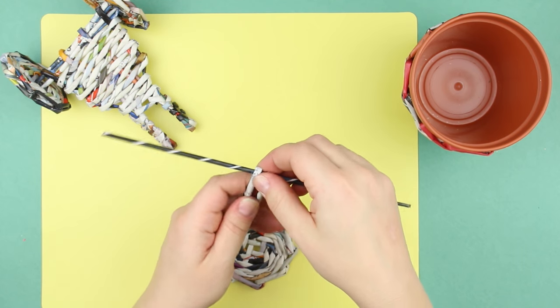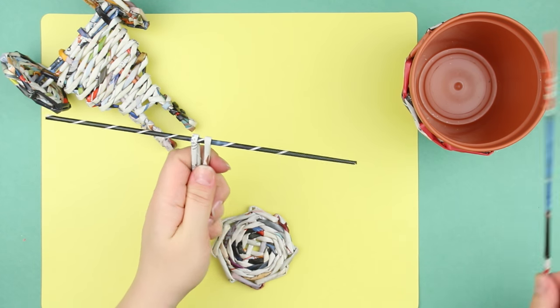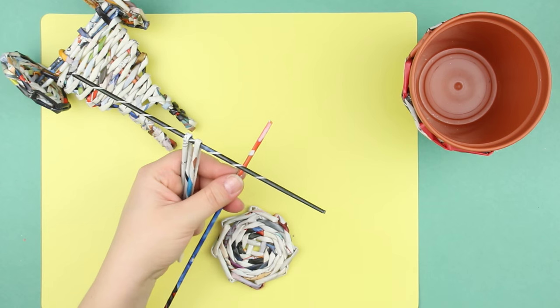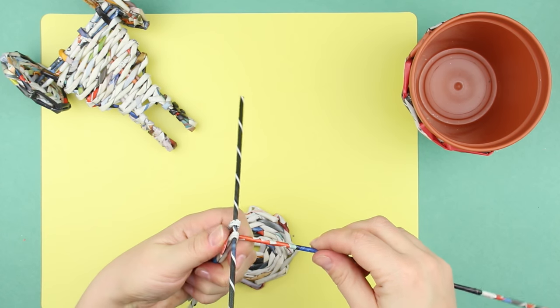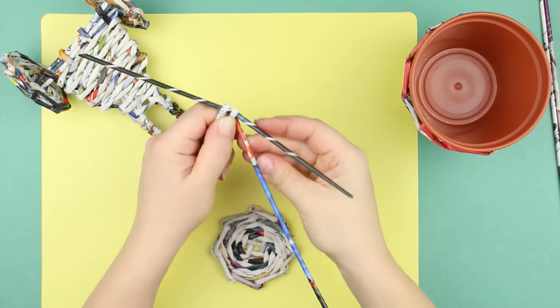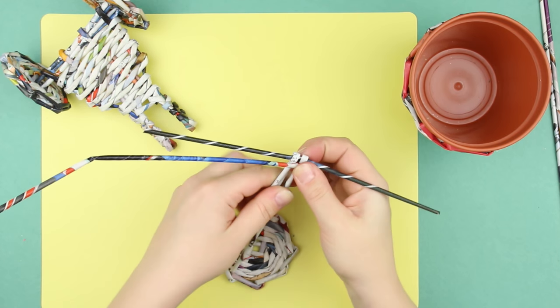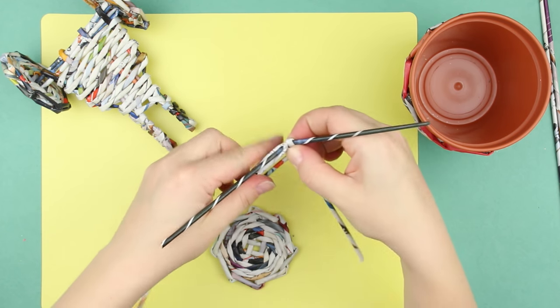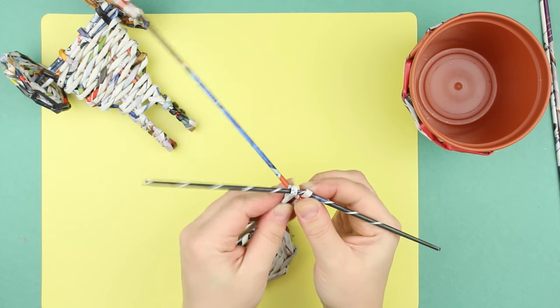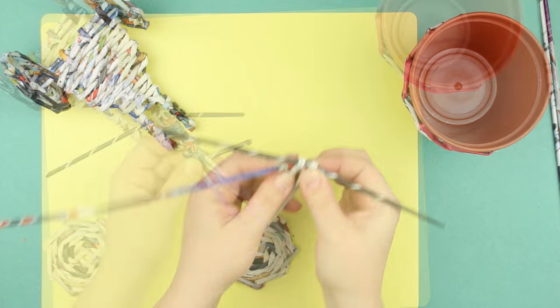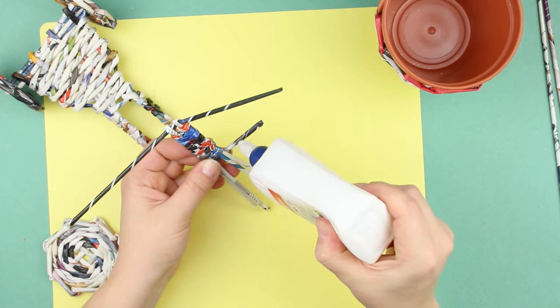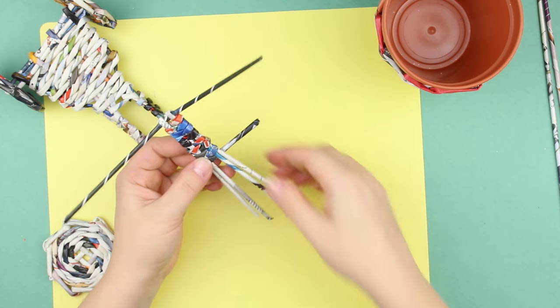Make a handlebar. Wind two tubes around the third one. Glue another tube end to the top of the handlebar. Weave around the pair stands with eight shaped winds. When the handlebar is of the appropriate height, glue the tube end.